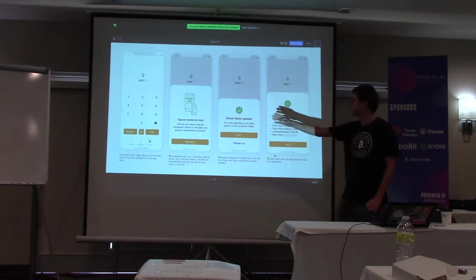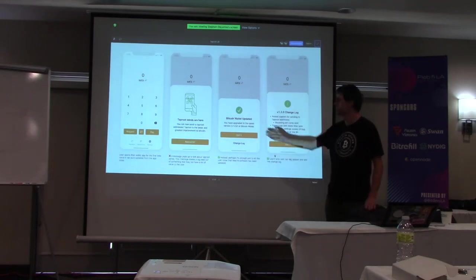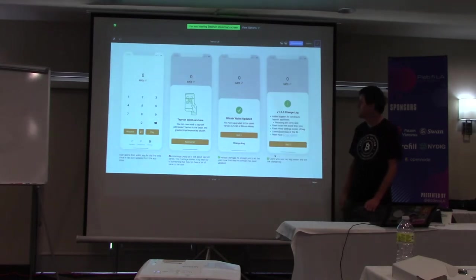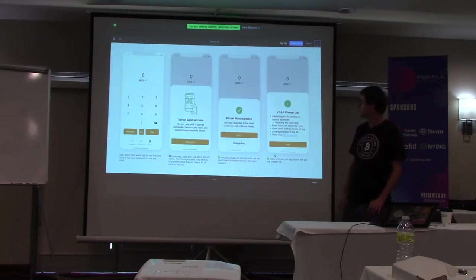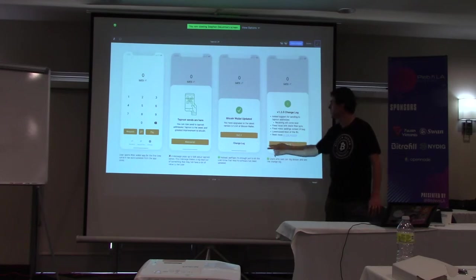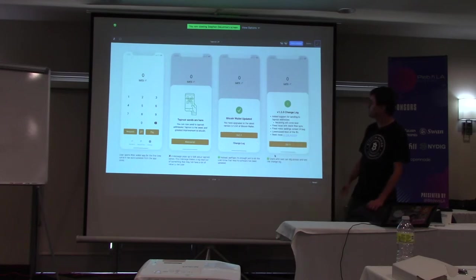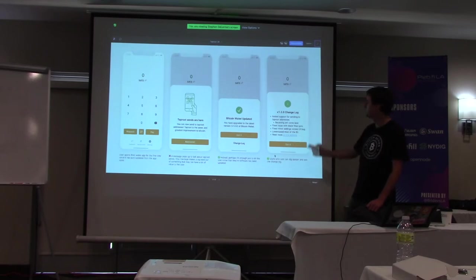I toned that back down — we can just scrap the big announcement. You can imagine a generic notification: every time the software updates, the user gets a little notification that they're on the latest version. And for transparency you have a changelog — users that really care about these details can look at the changelog and we can mention that it supports Taproot, but we don't need to make a big deal out of it.